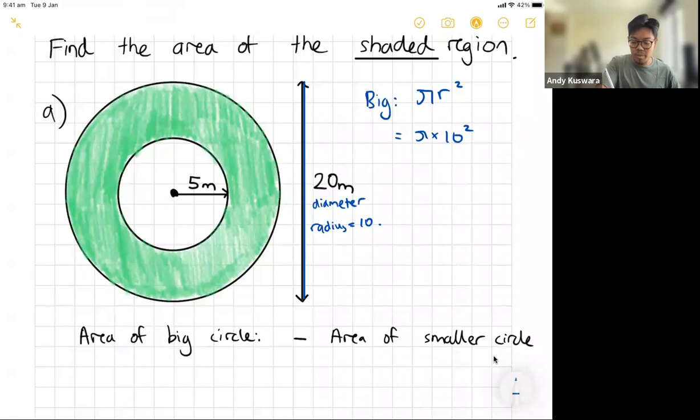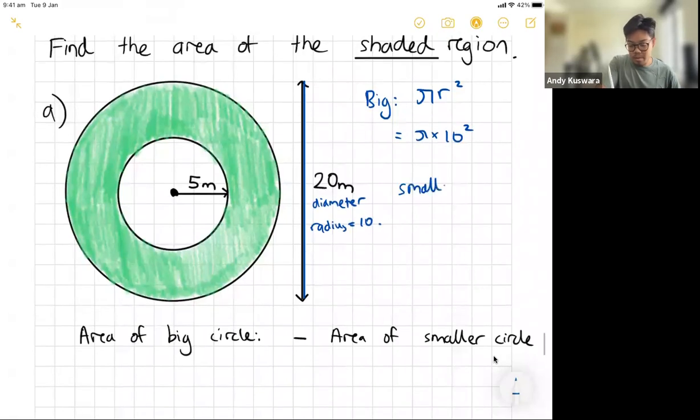Okay, now what about for the smaller one? The smaller circle, we can see here that 5 meters is actually a radius. So it's going to be a radius, and for that radius it's going to be pi times r squared again, but this time it's going to be pi times not 10, but the radius is 5, so it's going to be pi times 5 squared.